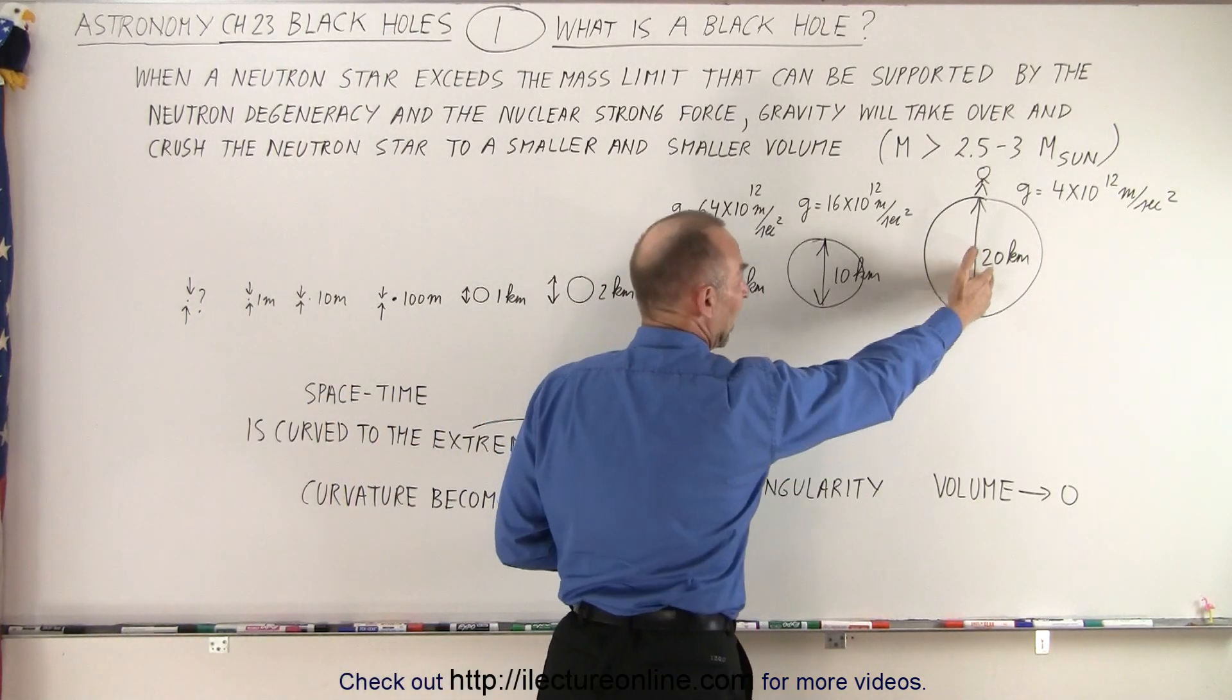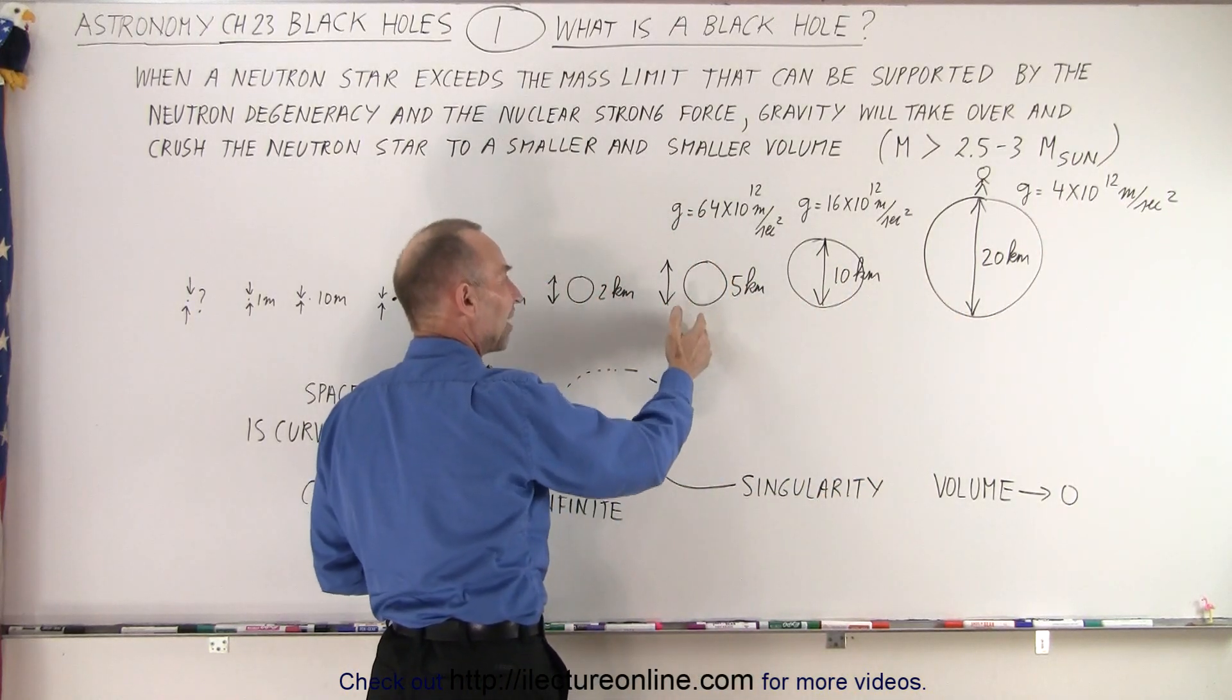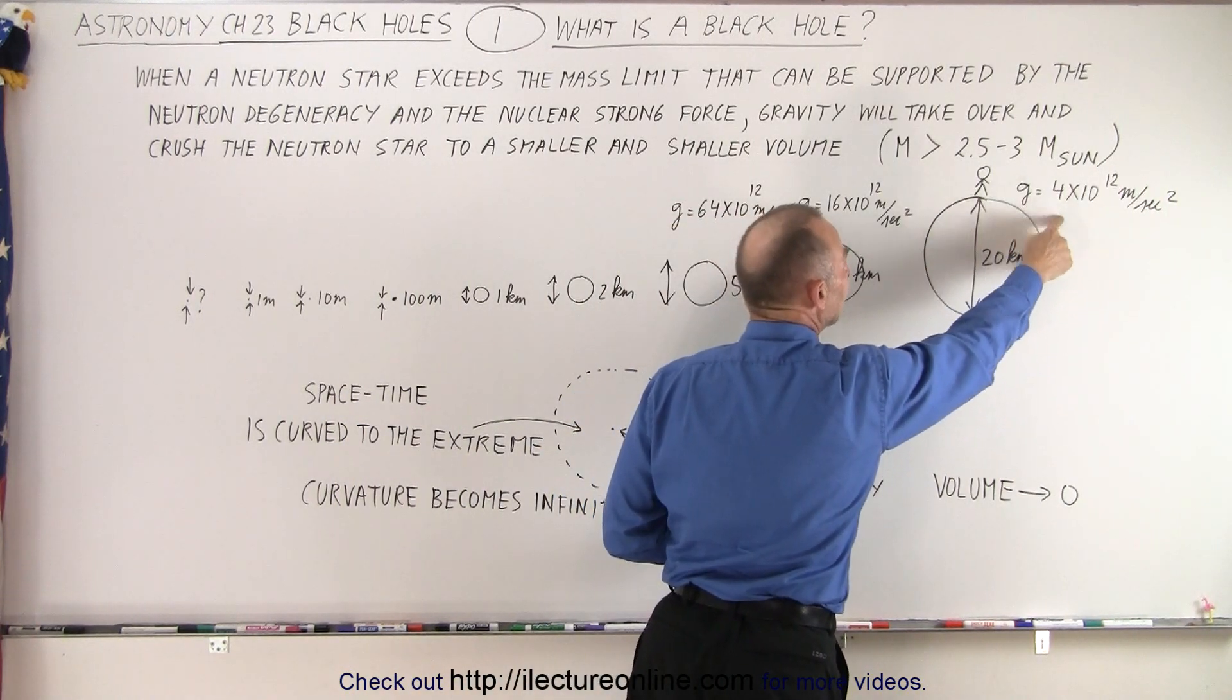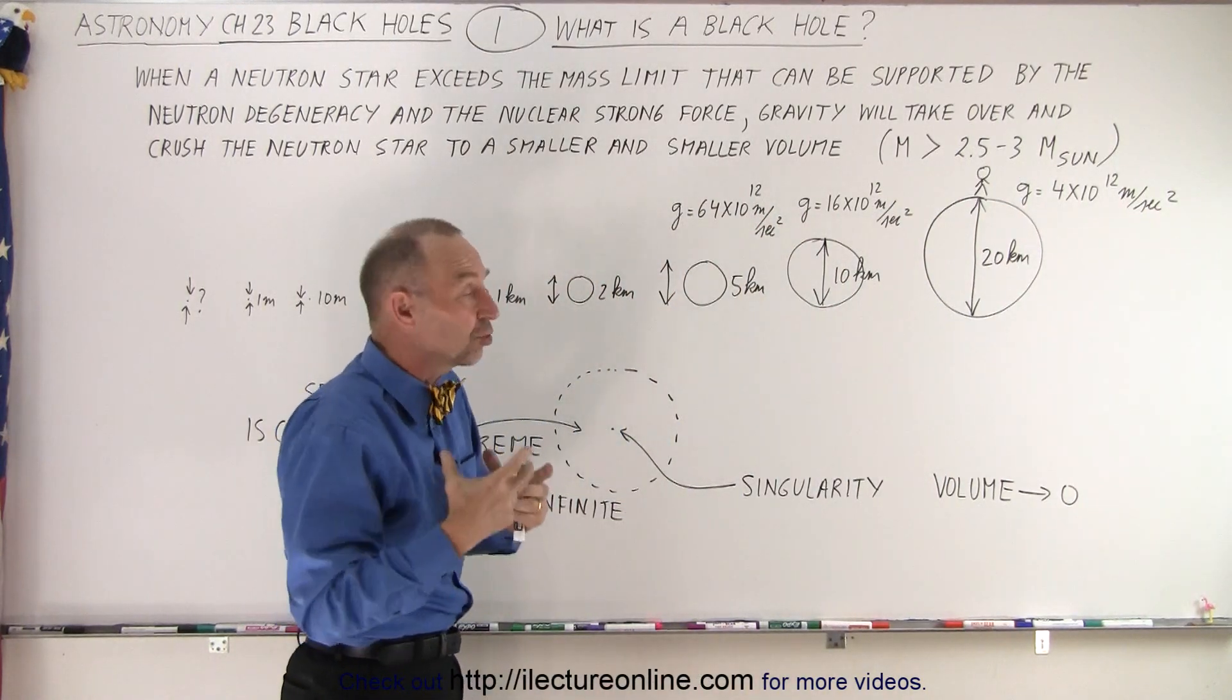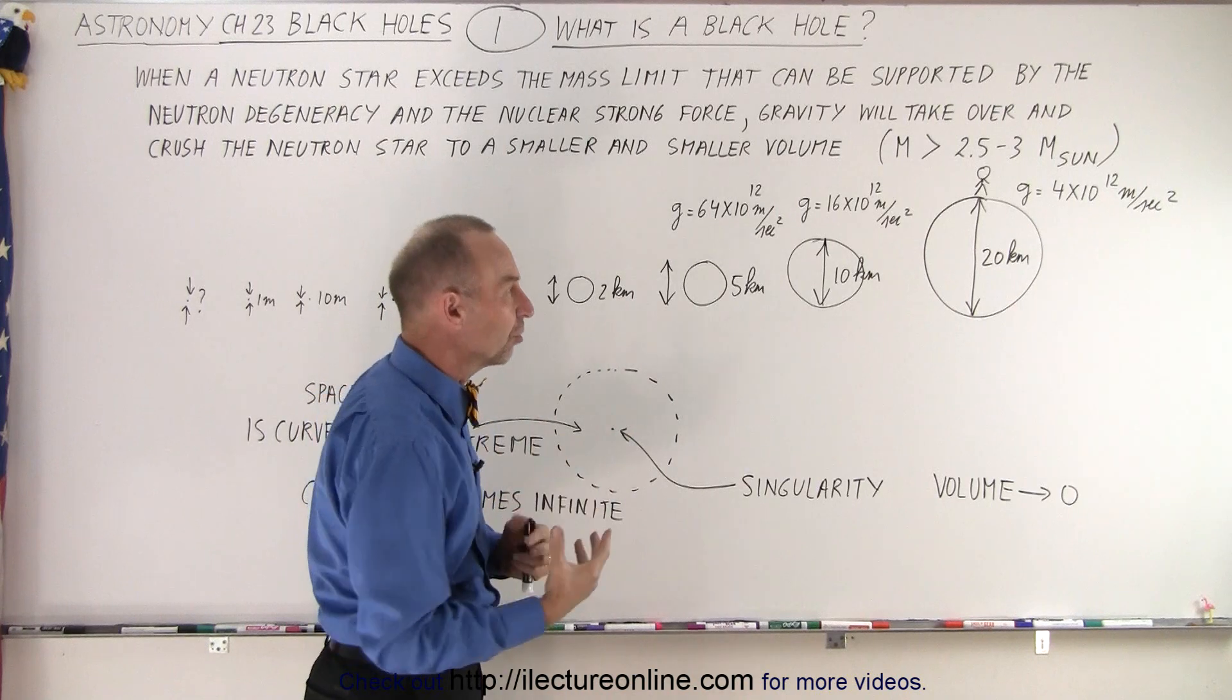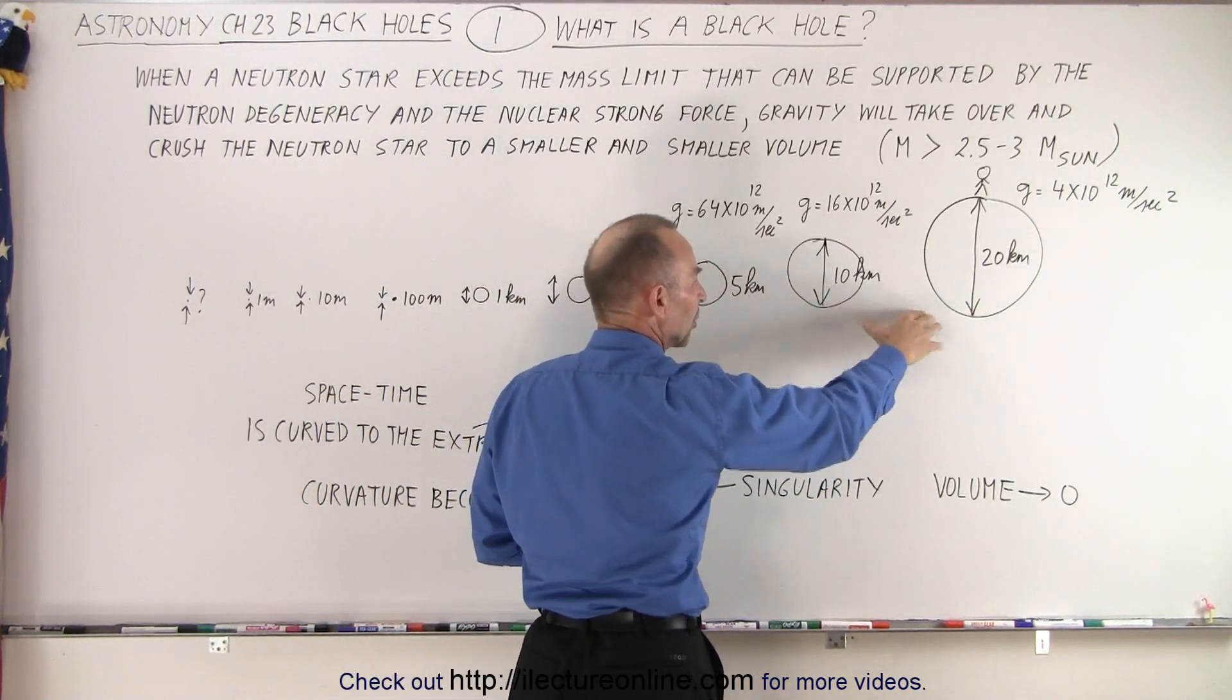And from a diameter of 20 kilometers, we go down to a diameter of 10 kilometers, down to a diameter of 5 kilometers, and notice how the gravitational force, the acceleration due to gravity, keeps on increasing as a function of the radius squared. So if you halve the radius, you quadruple the forces. So the forces continue to grow almost exponentially as a quadratic function.